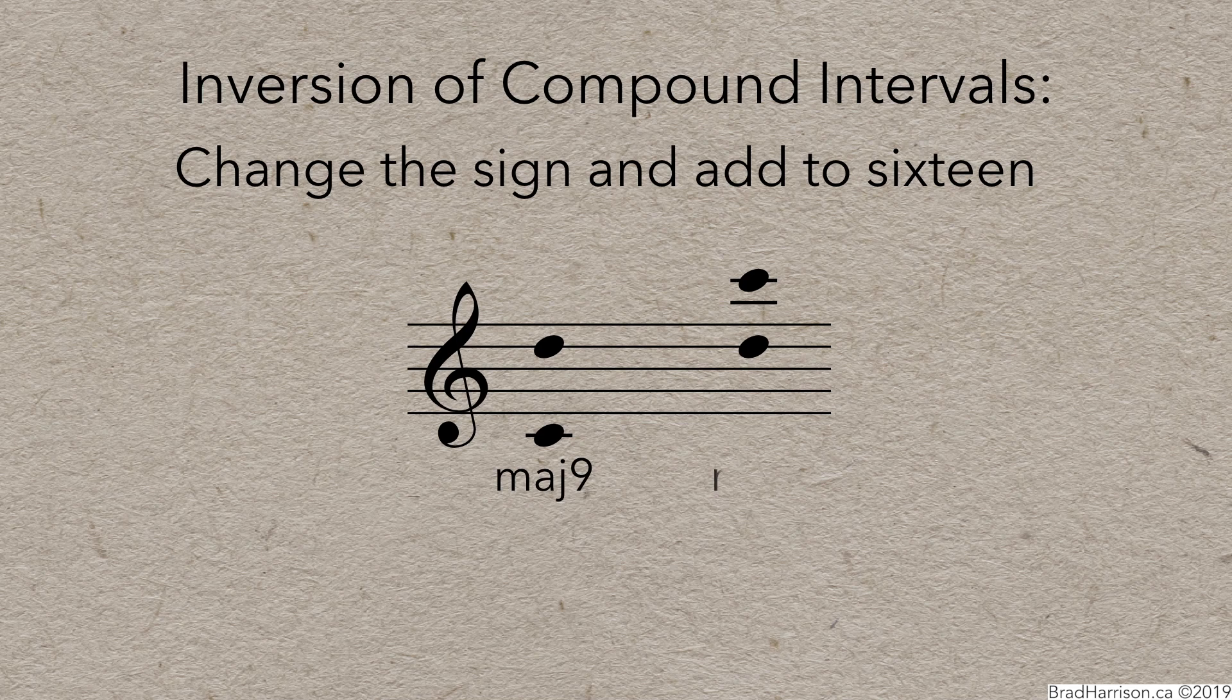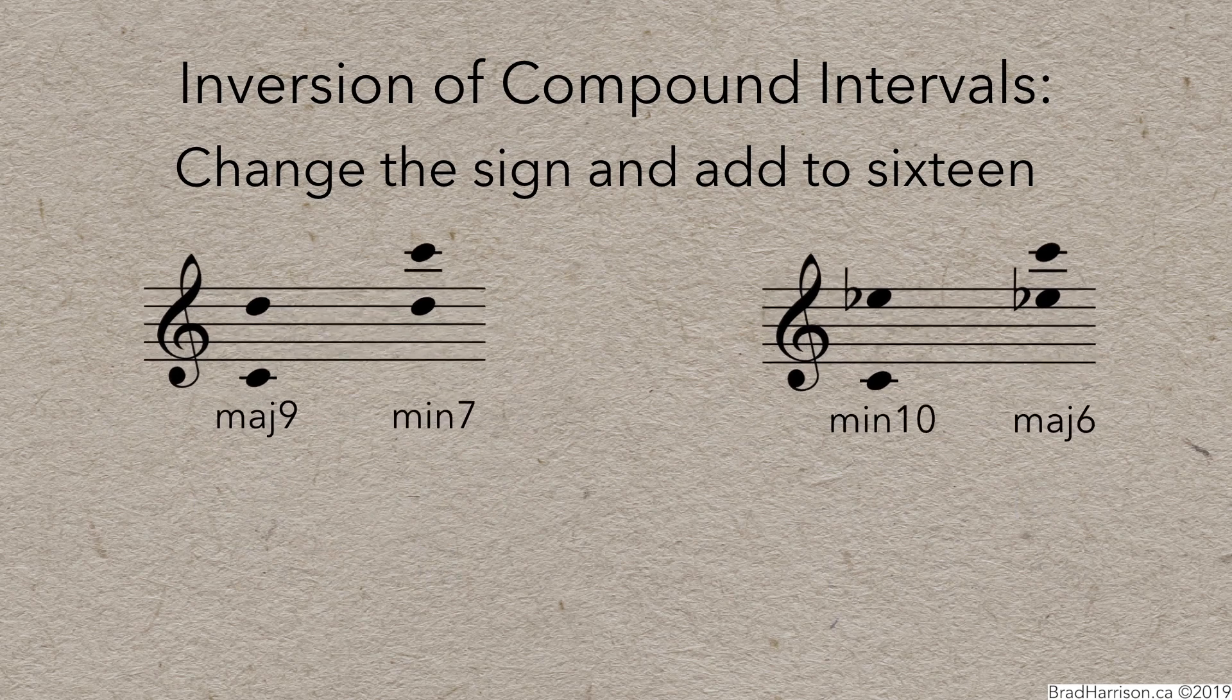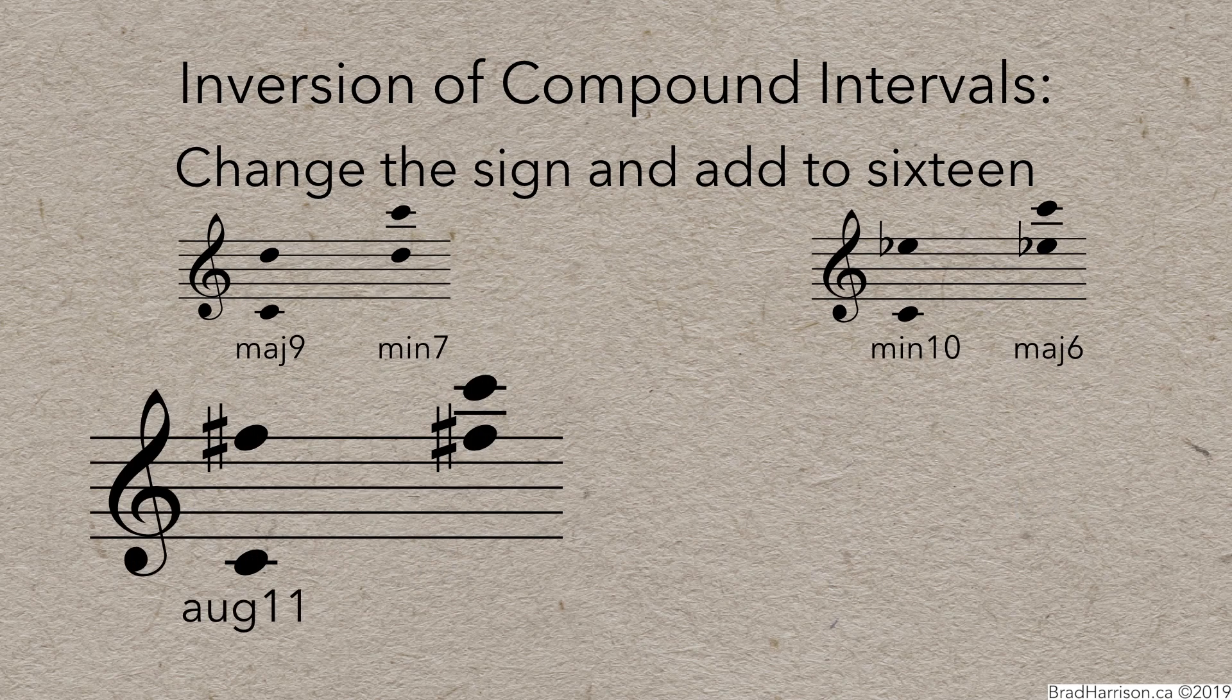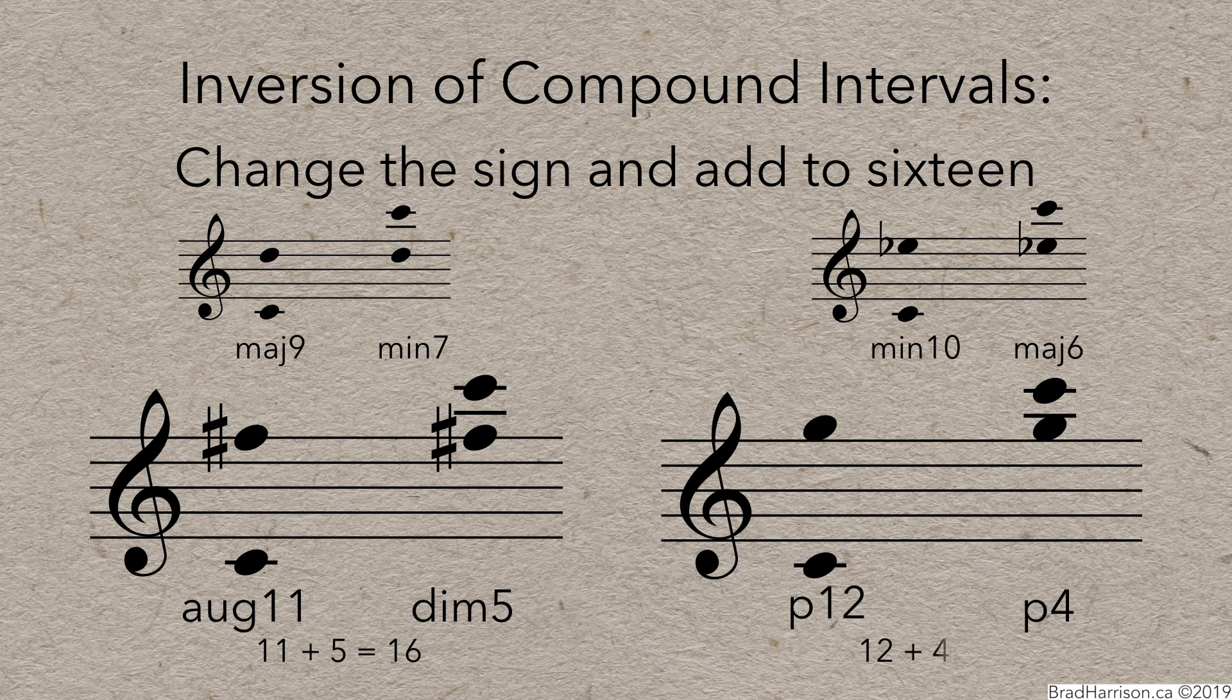So, if you invert a major 9th, you'll get a minor 7th. If you invert a minor 10th, you'll get a major 6th. An augmented 11th inverts to a diminished 5th, and a perfect 12th inverts to a perfect 4th. And that's inversions.